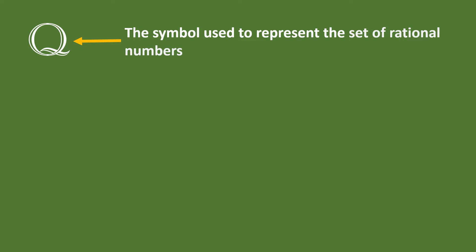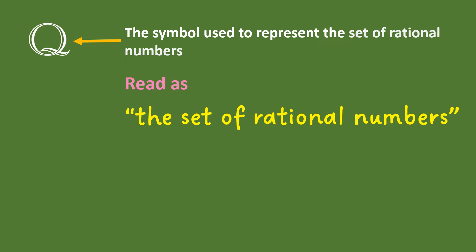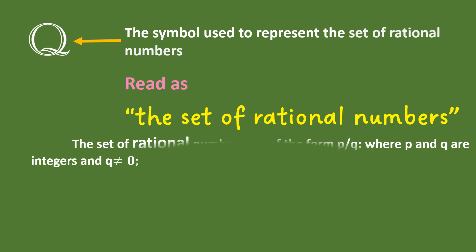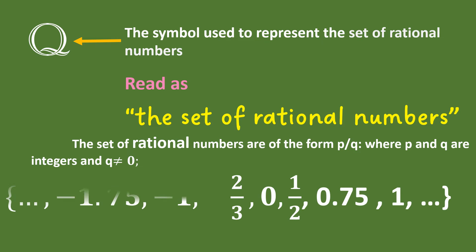The capital letter Q is used to represent the set of rational numbers. It is read as the set of rational numbers. The set of rational numbers are of the form P over Q, where P and Q are integers and Q should not be equal to 0. Examples of rational numbers are negative 1.75,